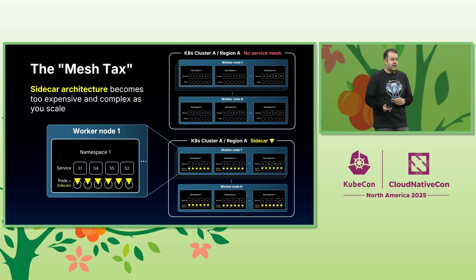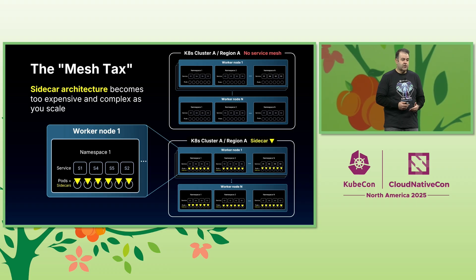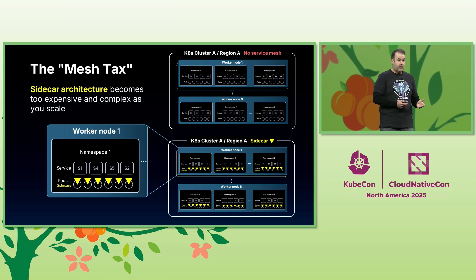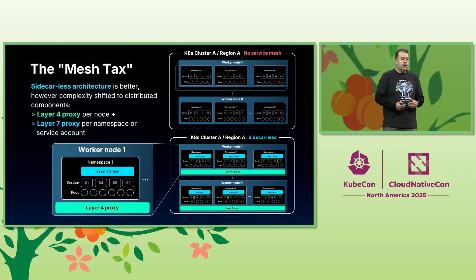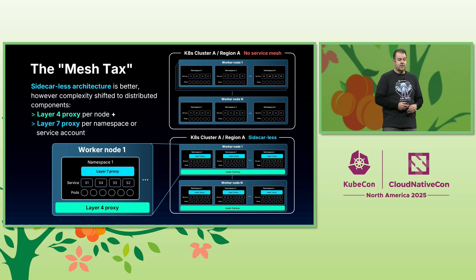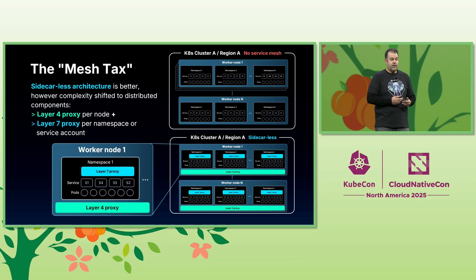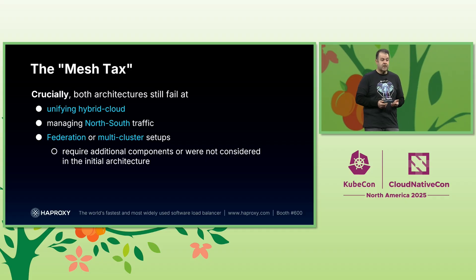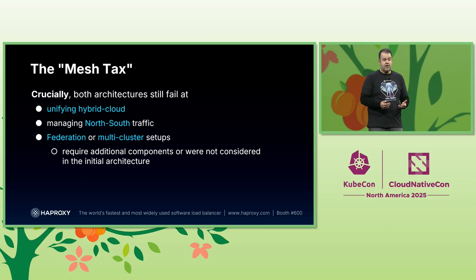Then comes the mesh tax. You have sidecar architectures, which is basically a sidecar injected per pod, that become too expensive and complex as you scale to hundreds and thousands of pods. Then you have the sidecar-less architecture, which is better. However, complexity is distributed to different distributed components — a layer 4 proxy per node, and layer 7 proxies per namespace or service account. Crucially, both architectures still fail at unifying hybrid cloud, managing north-south traffic, and federated or multi-cluster setups.